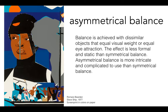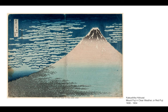Asymmetrical balance is achieved when dissimilar objects that are equal in value attract the eye's attention. The effect is less formal and less static than symmetrical balance. Asymmetrical balance tends to be a little more complicated. In this example you can see the figure's face is clearly the focal point and it's counterbalanced by the gray mass next to it. Here's another example where Mount Fuji is the focal point, counterbalanced by the intricate elements within the sky.